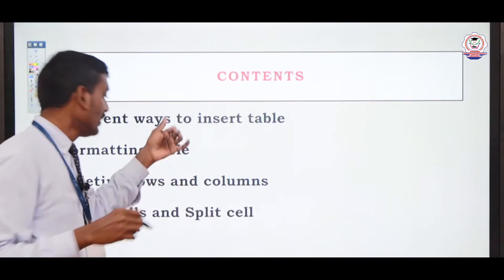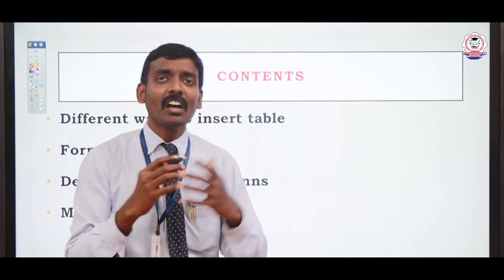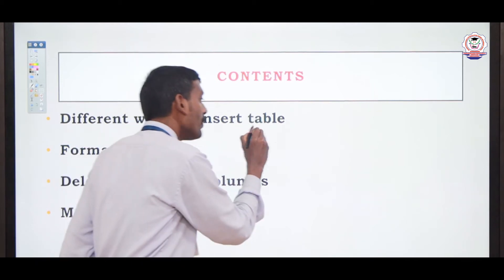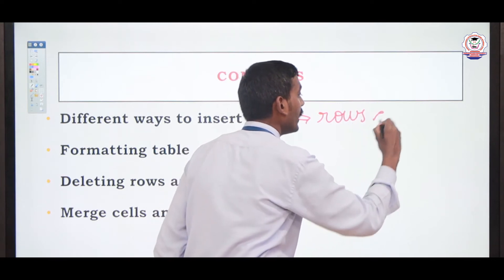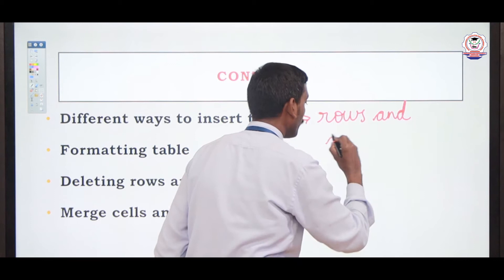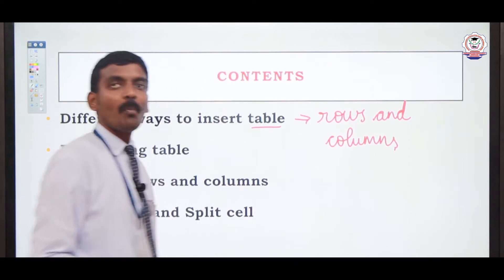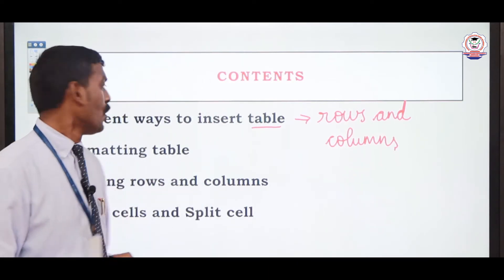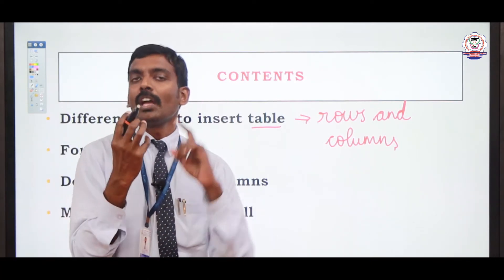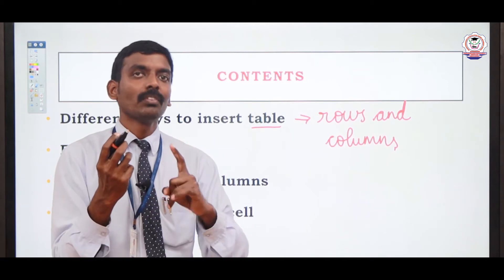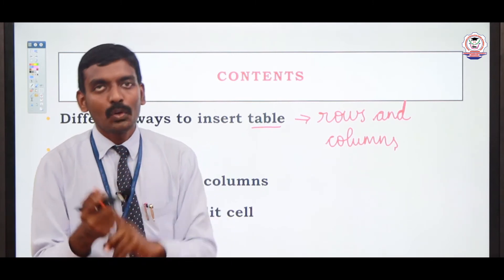Now we are seeing the new concepts. What are the concepts? Different ways to insert a table. What is the meaning of a table? A table means it is the combination of rows and columns. What are the different ways? We have three ways: we can use a menu command, or we can use the Insert Table icon from the toolbar, or we can use the shortcut Control plus F12.